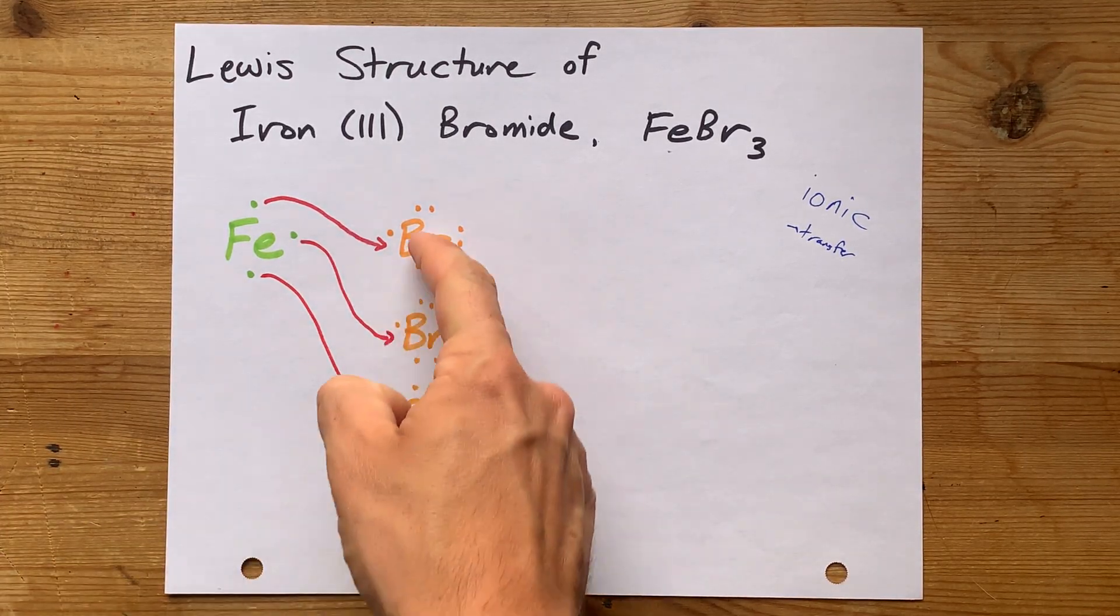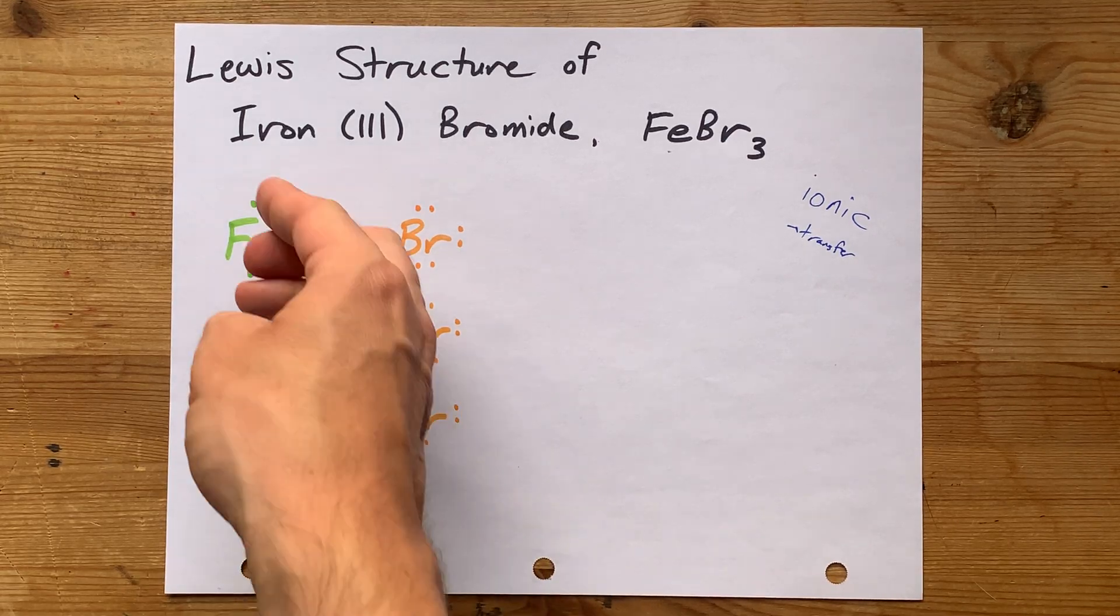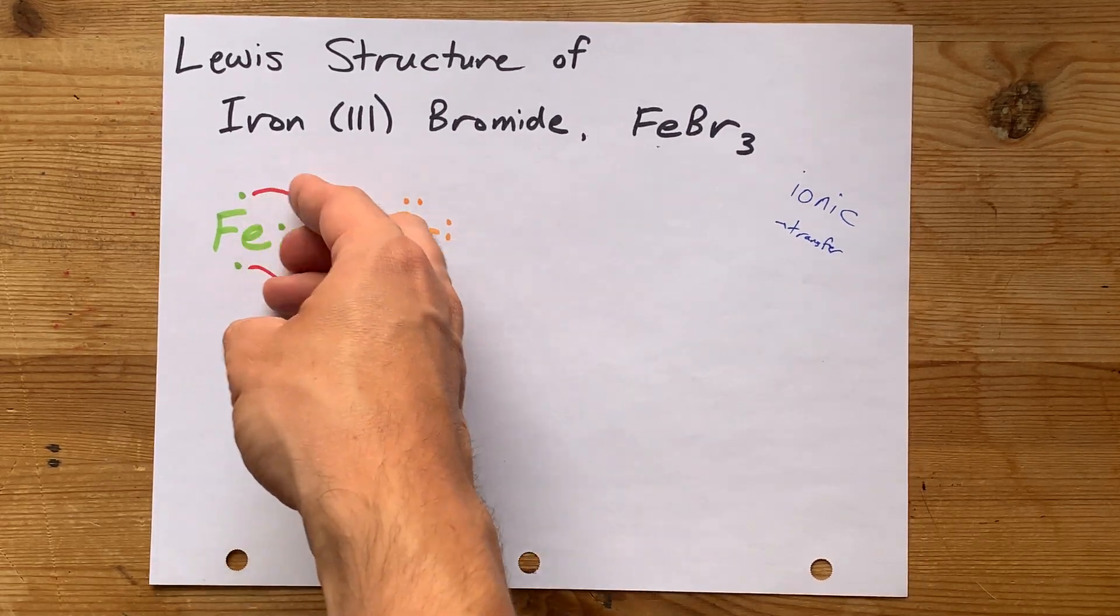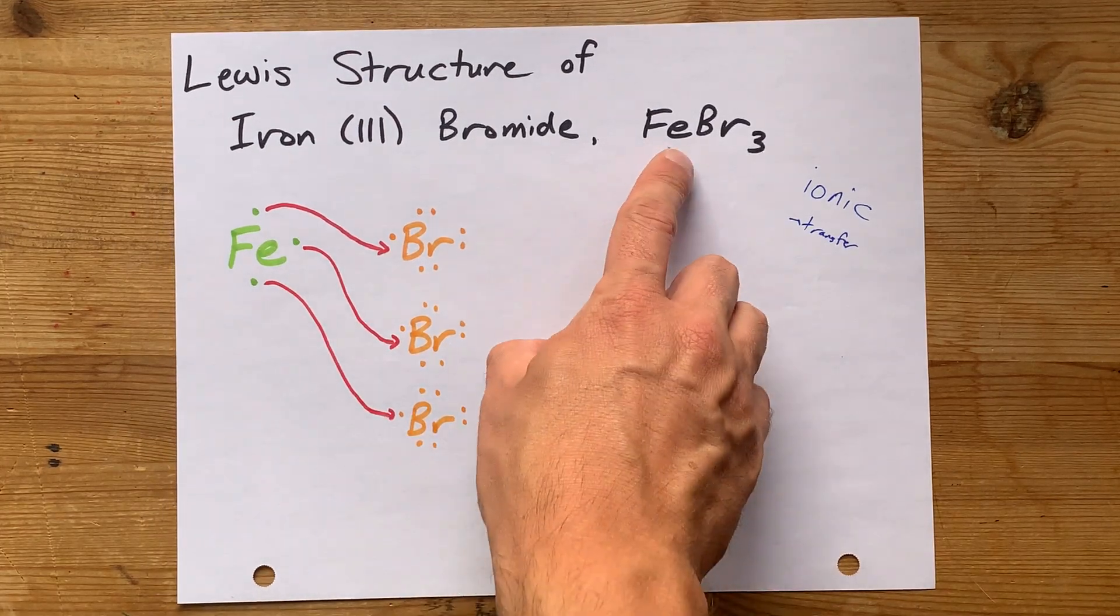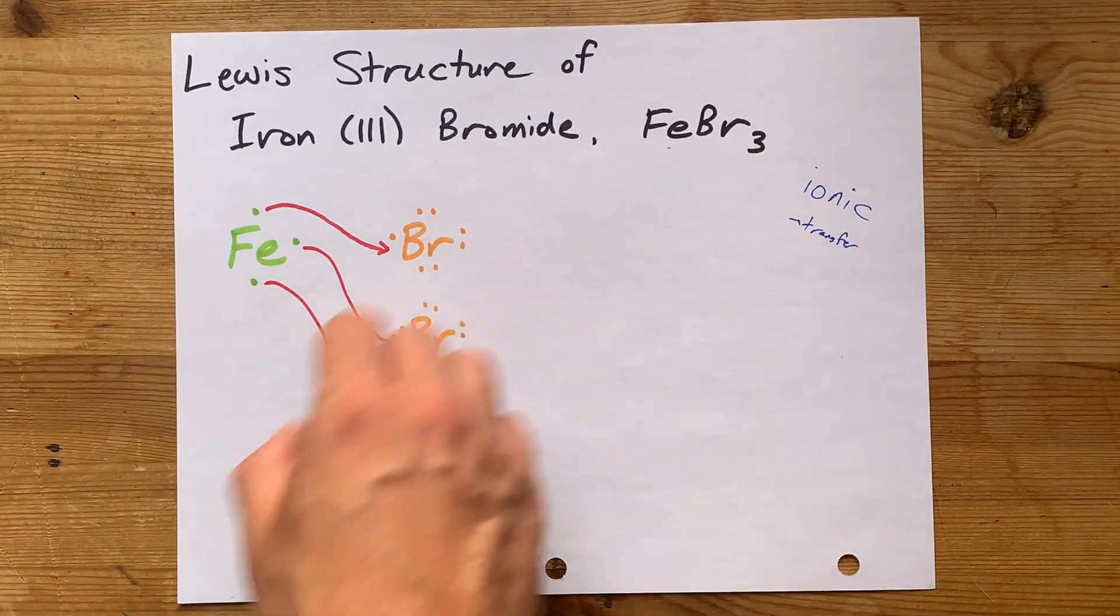The fact that we need 3 bromines to accept each, or 1 each, of iron's 3 valence electrons is why the formula is FeBr3.